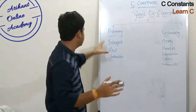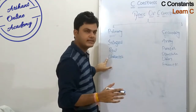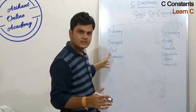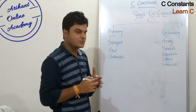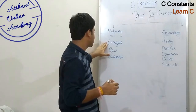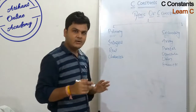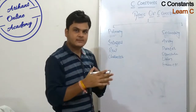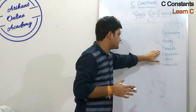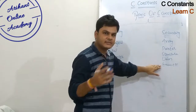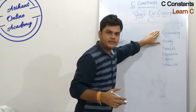In this video, we will learn about primary constants: integer, real, and character constants. There are specific rules in C for how to apply integer constants, real constants, and character constants. On the other hand, when we use arrays, pointers, structures, and unions — those come under secondary constants.